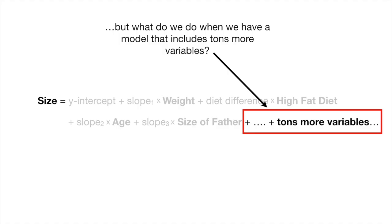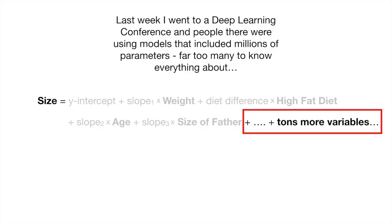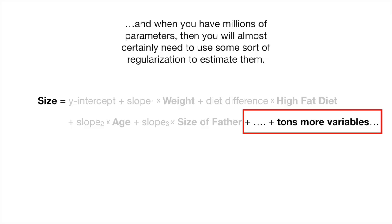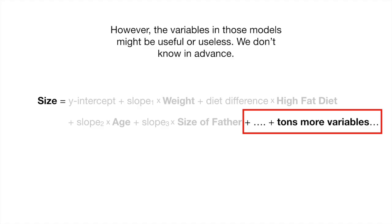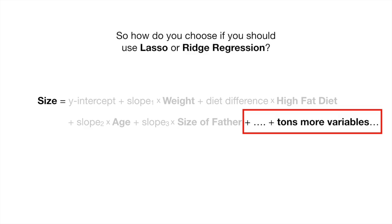But what do we do when we have a model that includes tons more variables? Last week, I went to a deep learning conference, and people there were using models that included millions of parameters, far too many to know everything about. And when you have millions of parameters, then you will almost certainly need to use some sort of regularization to estimate them. However, the variables in those models might be useful or useless. We don't know in advance.